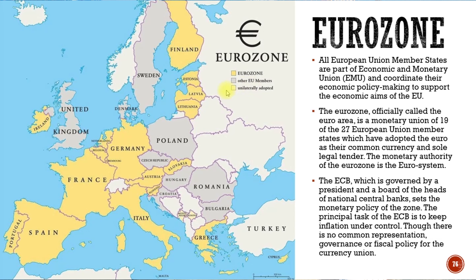Poland, Czech Republic, Hungary, Croatia, Romania, and Bulgaria are also not part of the eurozone, and some might adopt it at a later point. There are rules on how and when you may have to adopt it, depending on how you negotiate upon joining the European Union. All EU member states are part of the European Economic and Monetary Union (EMU) and coordinate their economic policies. The eurozone — officially called the euro area — is a monetary union of 19 of the 27 EU members, who have adopted the euro as their common currency and sole legal tender.